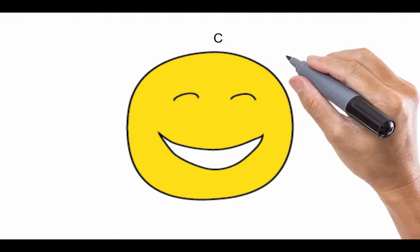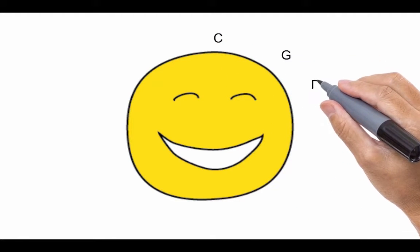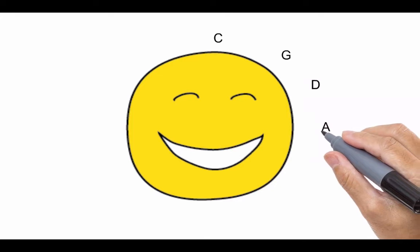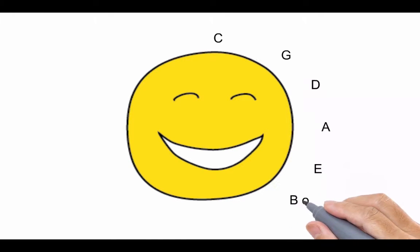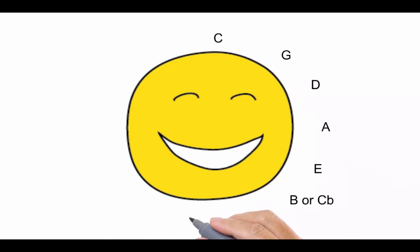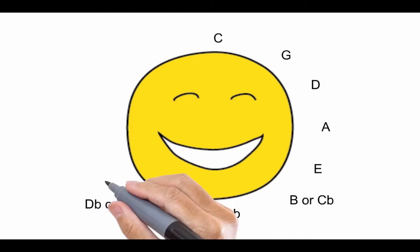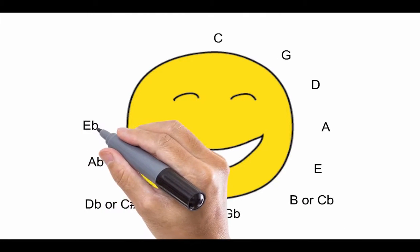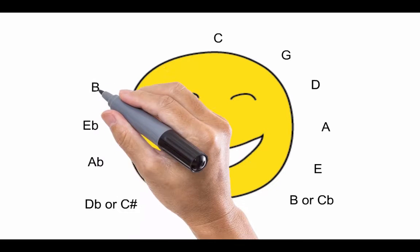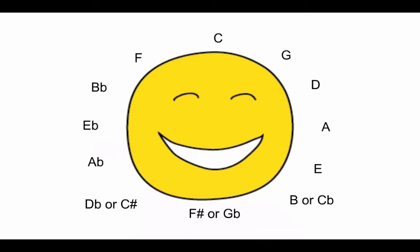Today we're going to talk about the mysterious thing known as the circle of fifths. This has to do with the key signatures that are related to all 12 different notes on the piano. The way we're going to do that is circle through and see how we can go up a fifth, up a fifth, up a fifth, until we've touched every single tone.